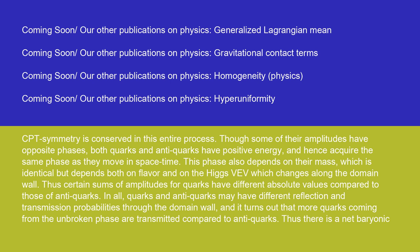Thus there is a net baryonic flux through the domain wall. Due to sphaleron transitions, which are abundant in the unbroken phase, the net anti-baryonic content of the unbroken phase is wiped off as anti-baryons are transformed into leptons. However, sphalerons are rare enough in the broken phase as not to wipe off the excess of baryons there. In total, there is net creation of baryons as well as leptons. In this scenario, non-perturbative electroweak interactions (the sphaleron) are responsible for the B violation, the perturbative electroweak Lagrangian is responsible for the CP violation, and the domain wall is responsible for the lack of thermal equilibrium and the P violation. Together with the CP violation, it also creates a C violation on each of its sides.